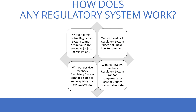How does any regulatory system work? Without direct control, the system cannot function — it is like an army where the general must say: move in this direction. If there is no direct control from brain to muscle, you cannot command. Without feedback, the regulatory system does not know how to command. Therefore we have sensors in the body that collect information and provide feedback to the neural system, informing it about the current situation. We must use feedback, and in our system — as in MegaWave — we use this same approach from biology.